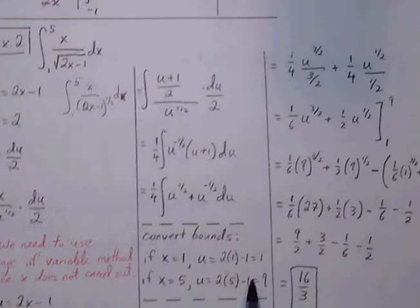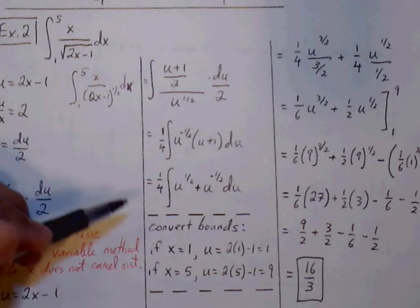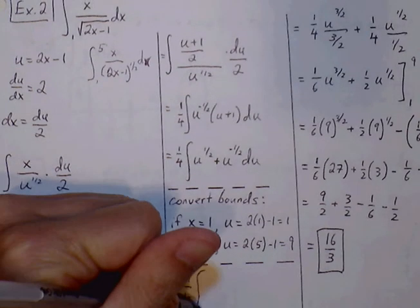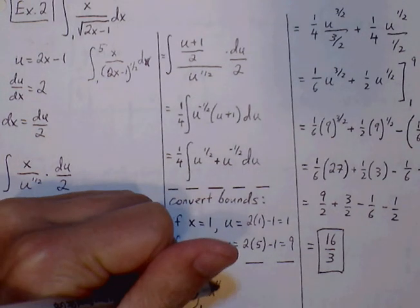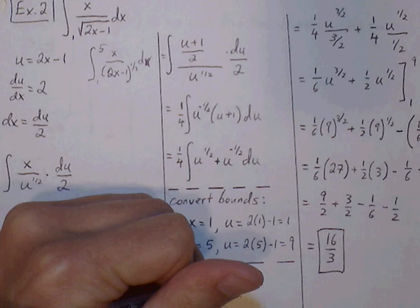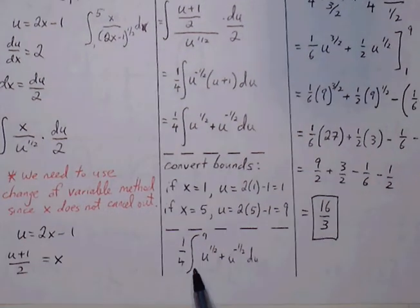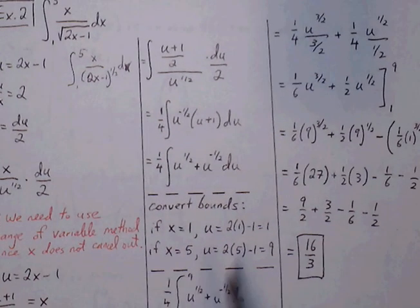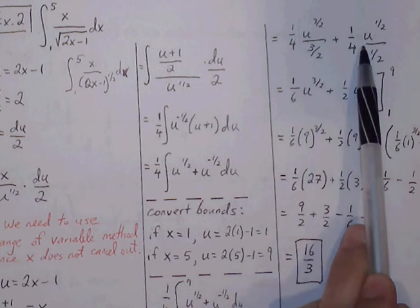So I'm going to rewrite my problem as the definite 1 fourth times the definite integral from 1 to 9 of u to the 1 half plus u to the negative 1 half du. We go through our power rule, making sure that we keep track of the 1 fourth. So u to the 3 halves over 3 halves, u to the 1 half over 1 half.